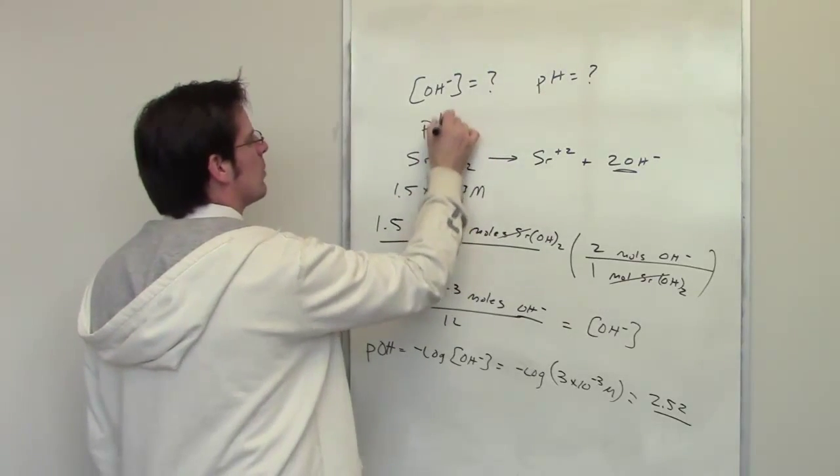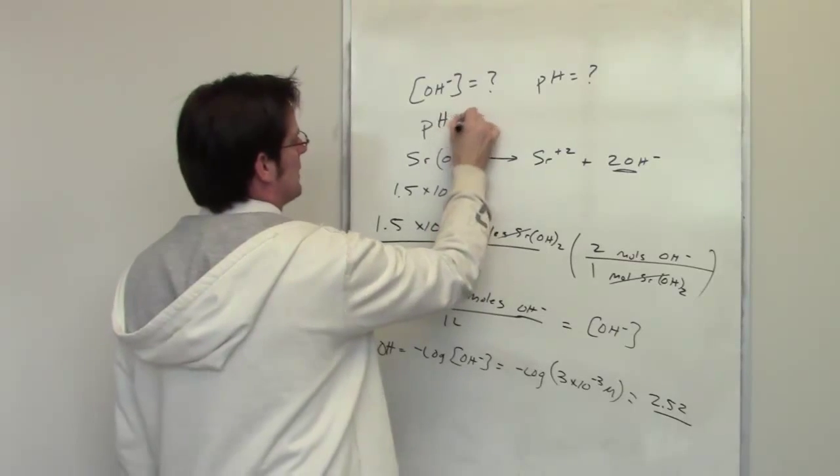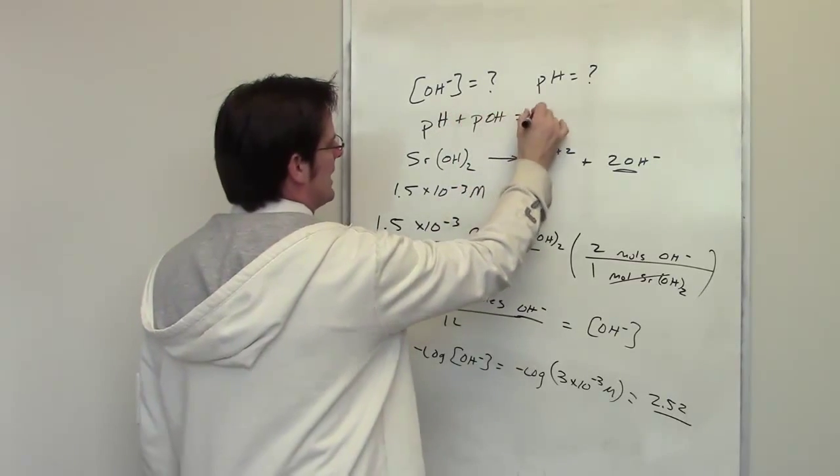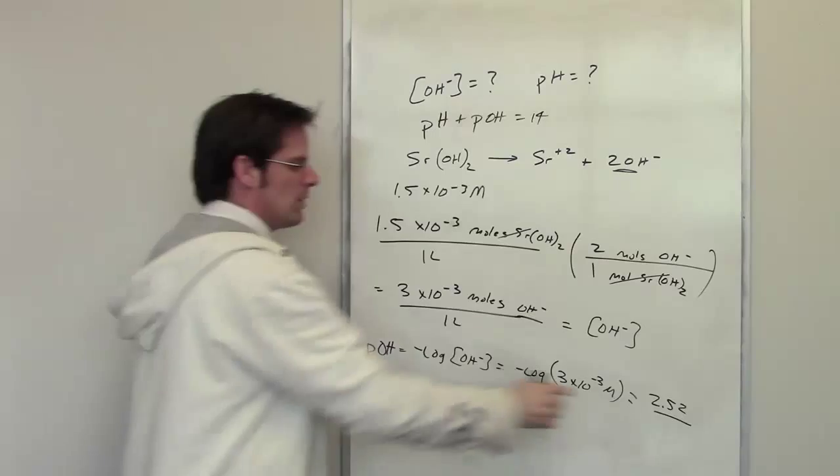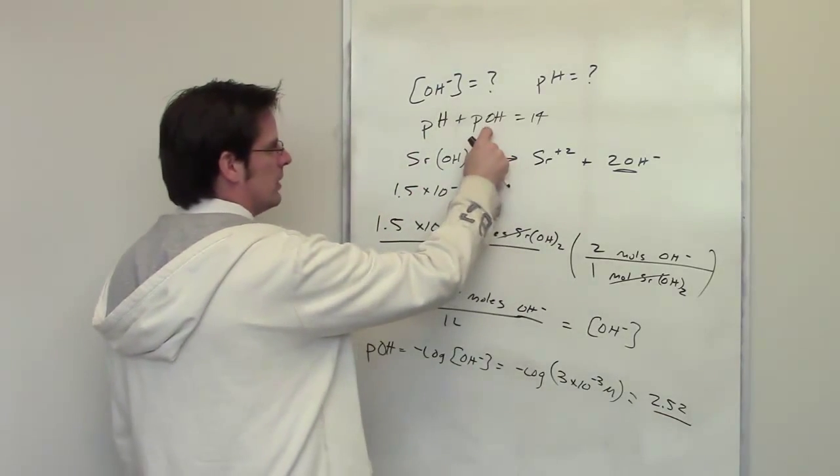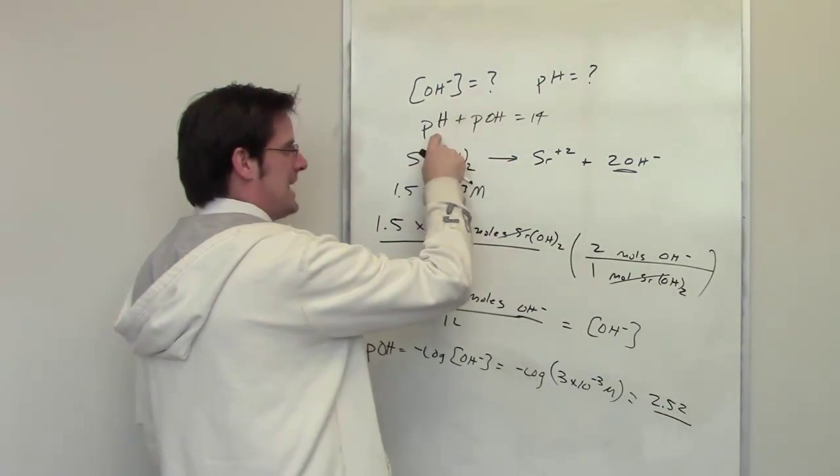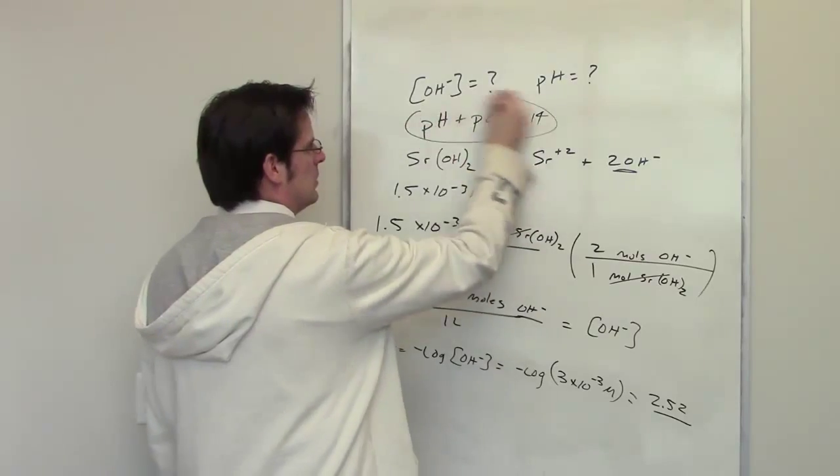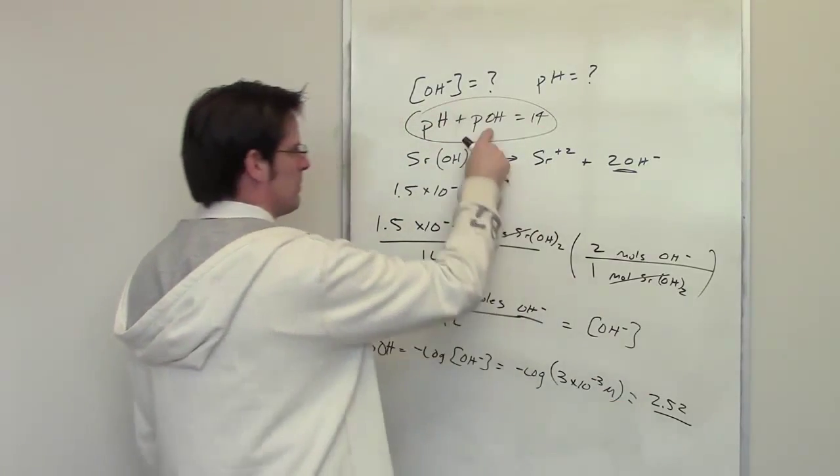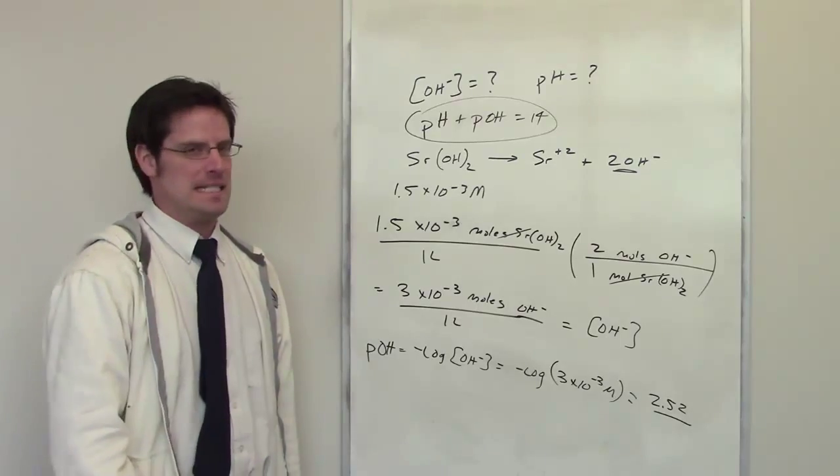And you might remember an equation I taught you elsewhere that says pH plus pOH are equal to 14. I know what pOH is. Can I just use algebra to determine what pH is? Absolutely. So go ahead and throw 2.52 for pOH, solve for pH, and then you'll be done.